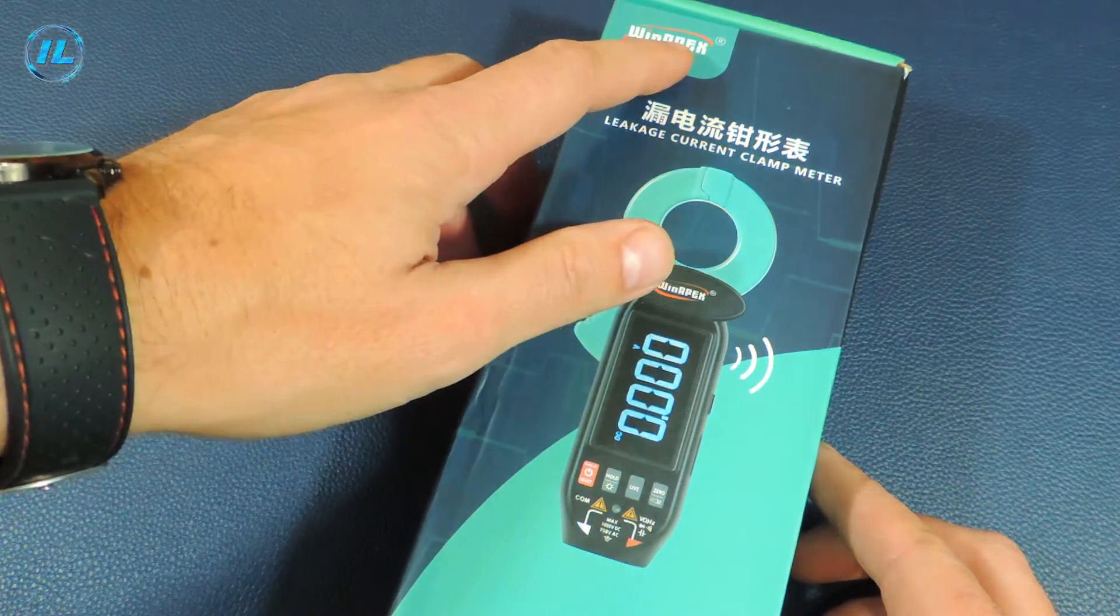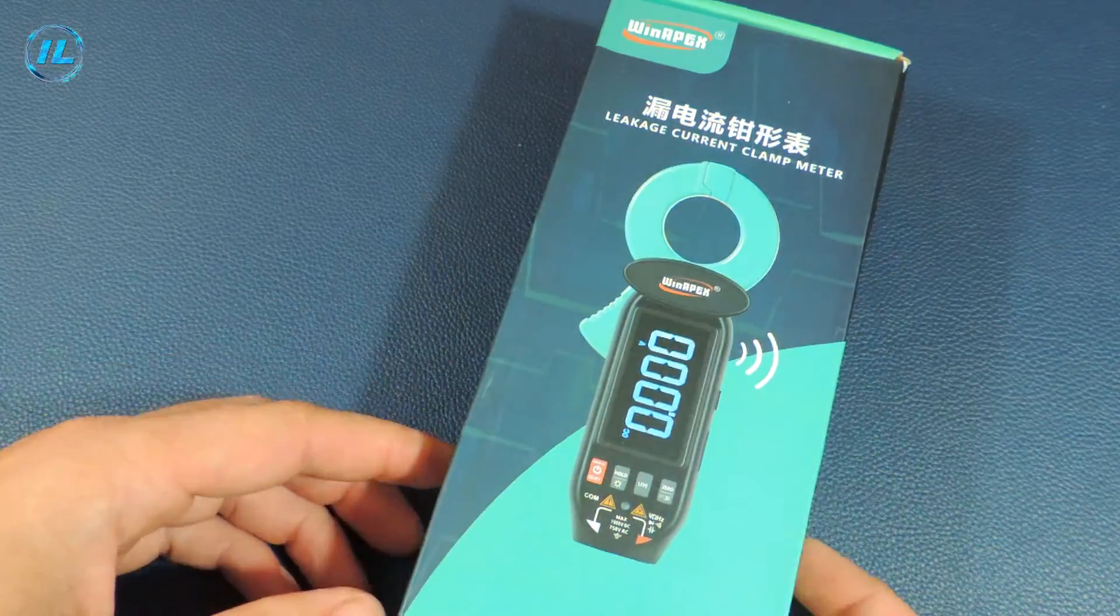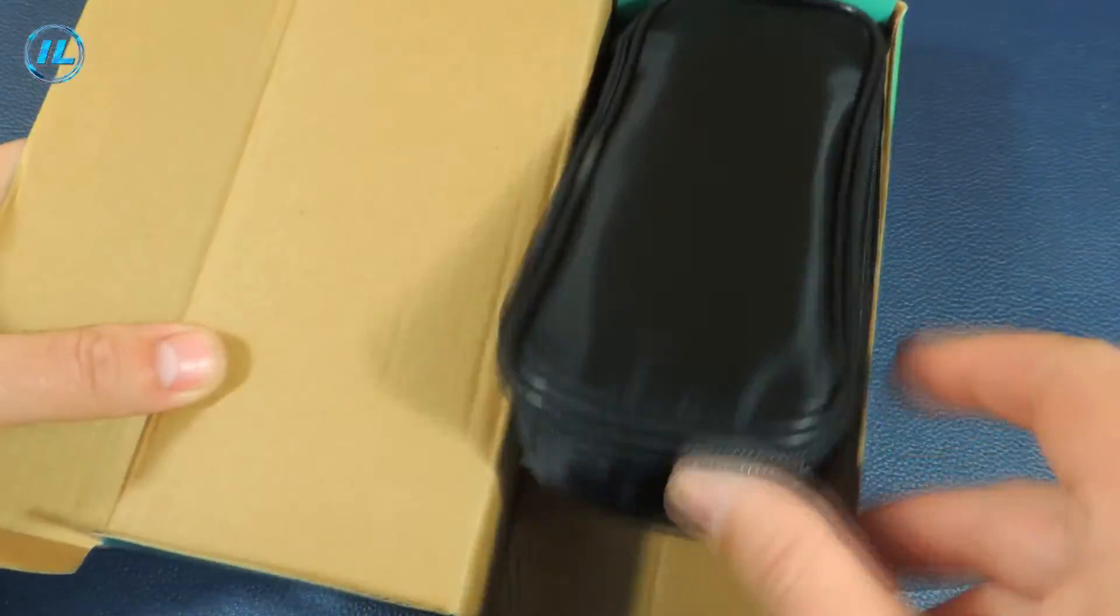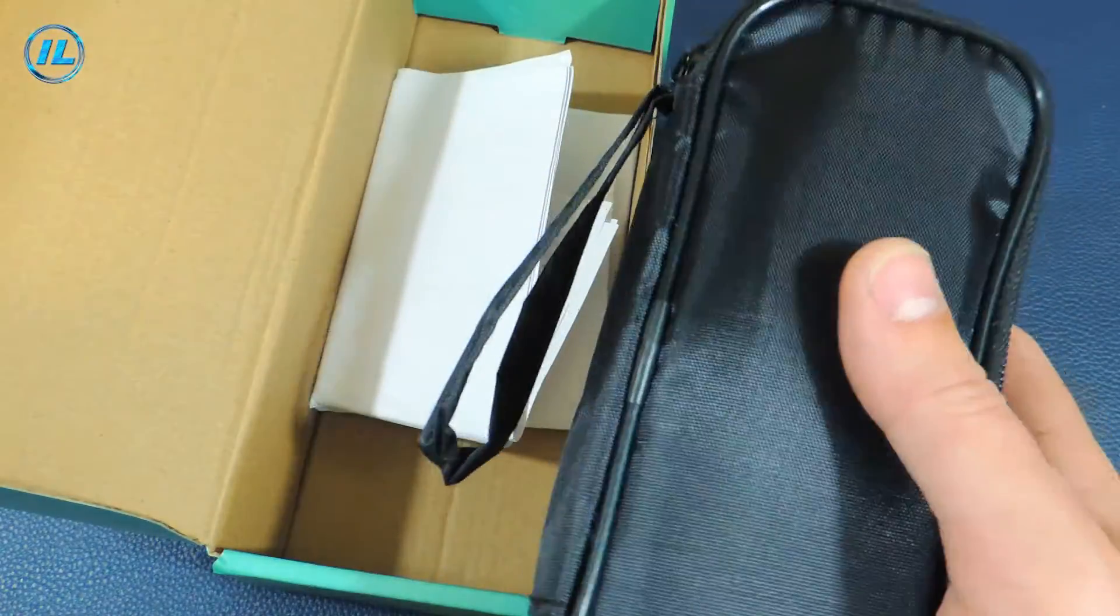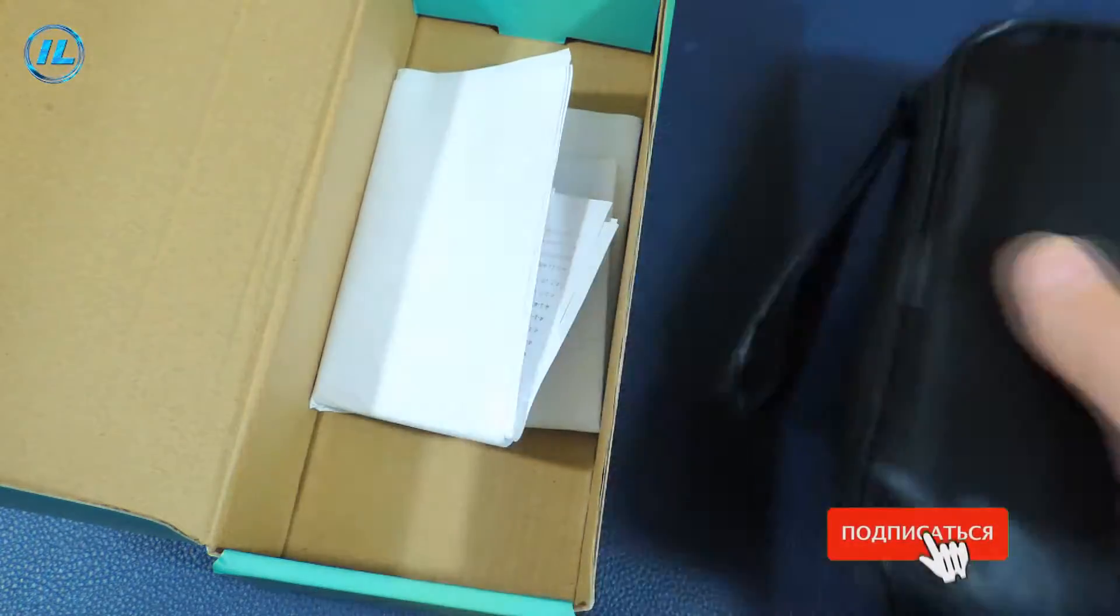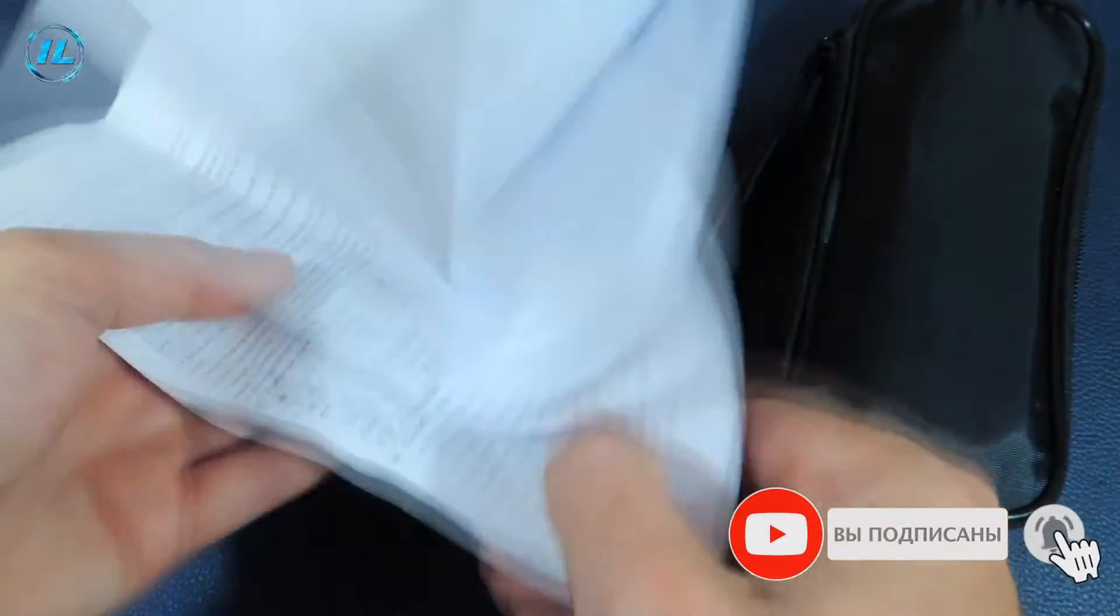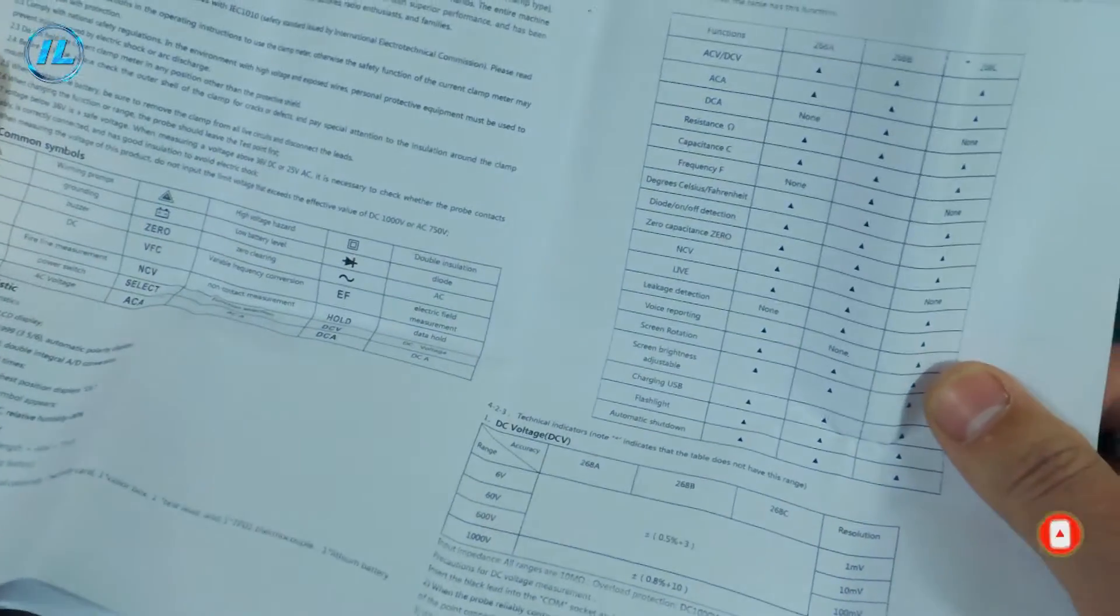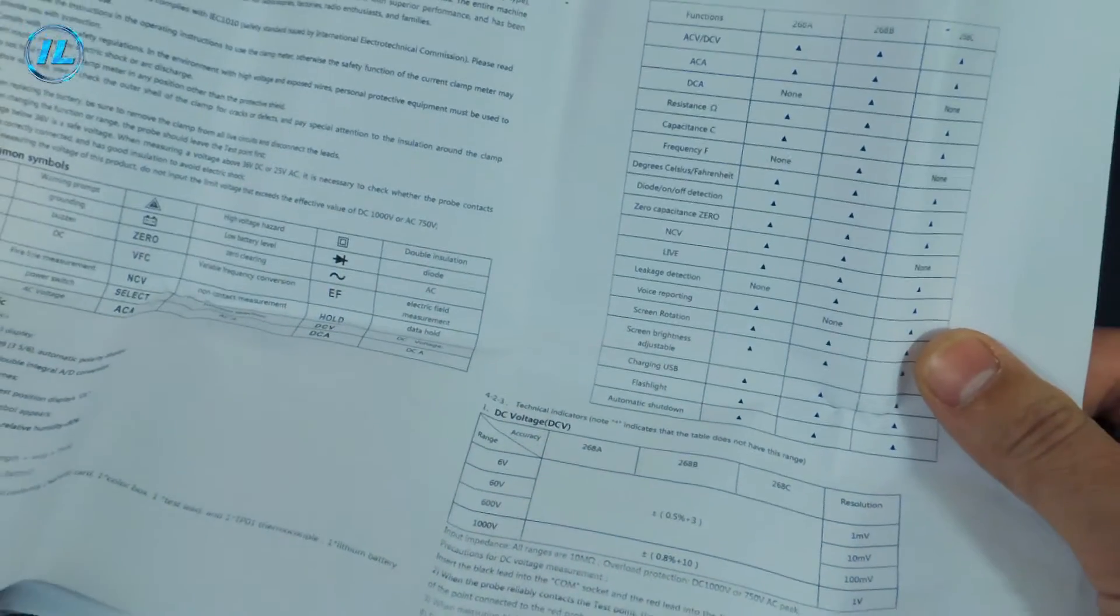WinAPEX current pliers are supplied in such a green box. Inside the box there is a cloth case for storing current tongs and their accessories. And here is such an unusual instruction. We will try to find the characteristics of this device here.